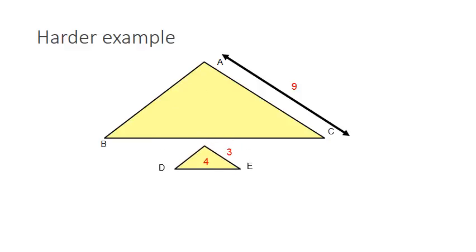3 and 9 are going to be similar, and 4 and the bottom, which we'll call BC. So we can set up our proportion: 3 over 4 (those two numbers are both in the same triangle) set equal to...